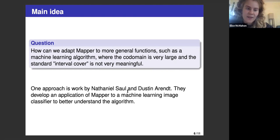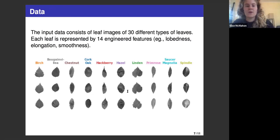One approach is work by Nathaniel Saul and Dustin Arendt. They develop an application of Mapper to a machine learning image classifier to better understand the algorithm. I will also include a link to their work in the video description, and everything that I talk about now is due to them.